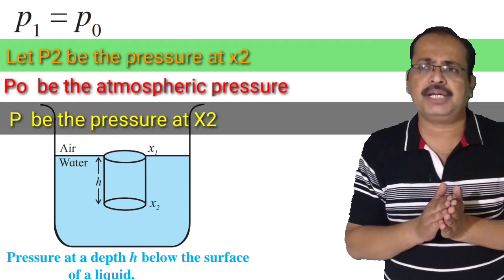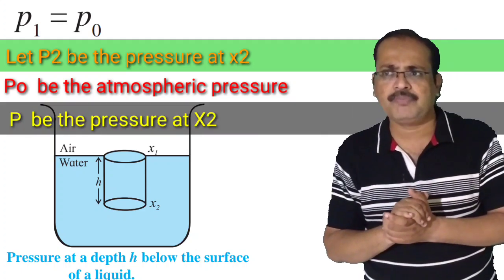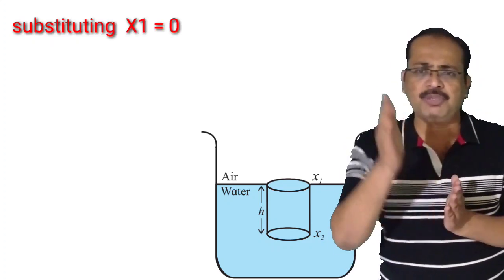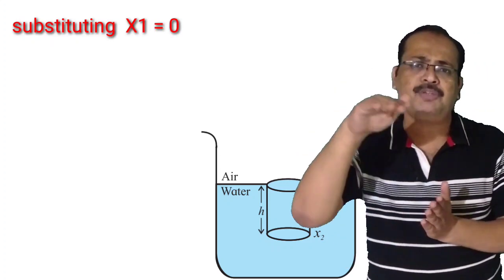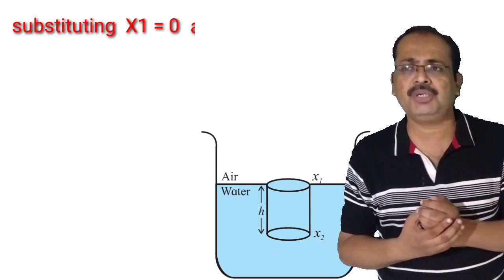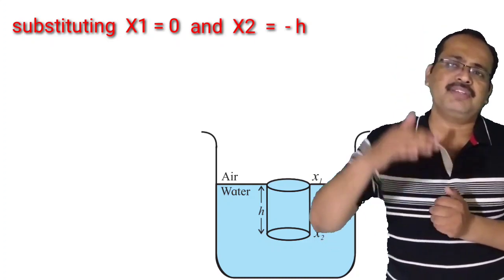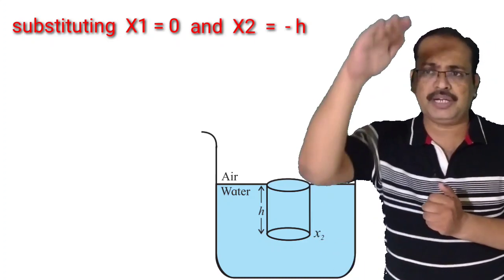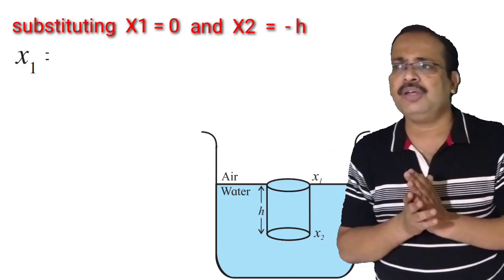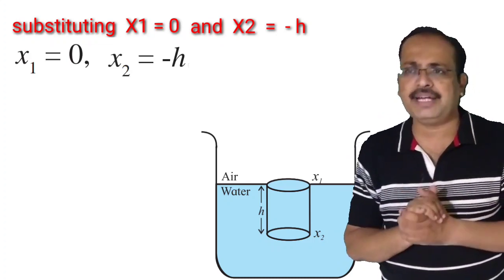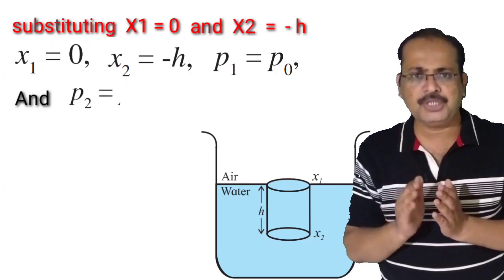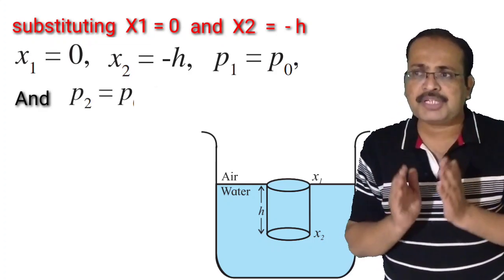Let P be the pressure at X2. Since X1 is at the surface, X1 is equal to 0. The point X2 is at depth h below the reference level, so X2 is equal to minus h. Substituting: X1 equals 0, X2 equals minus h, P1 equals P0, and P2 equals P into equation number 4.